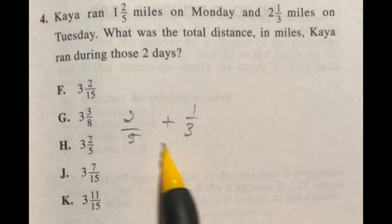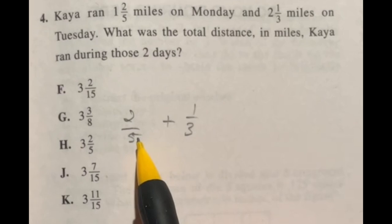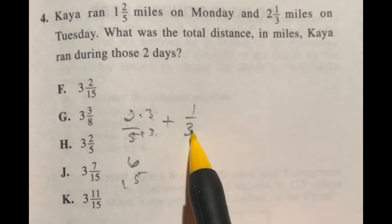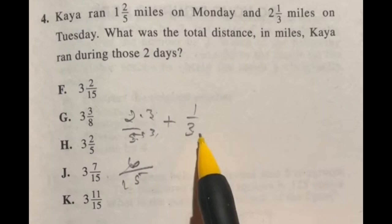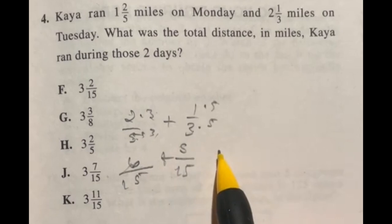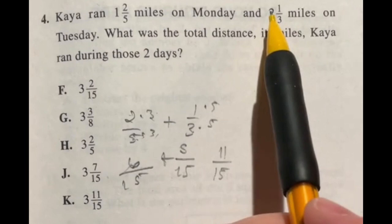So 5 times what is going to give me 15? Well 5 times 3 gives me 15. So I have to multiply both the top and bottom by that 3. So 2 times 3 is going to give me 6 and 5 times 3 is 15. Likewise 3 times what gives me 15? Well 3 times the 5 is going to give me 15. So I got to multiply the top by 5 as well. So 1 times 5 is 5. So we have 5 over 15. Now we can add straight across the top. So 6 plus 5 is going to give me 11 over 15. Now remember we still have to add that 1 and 2 to give us 3 so we have the final answer of 3 and 11 over 15. Which is going to be answer K.